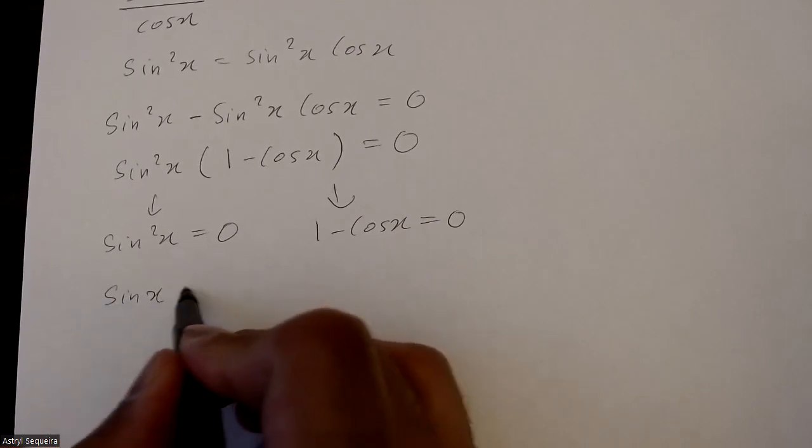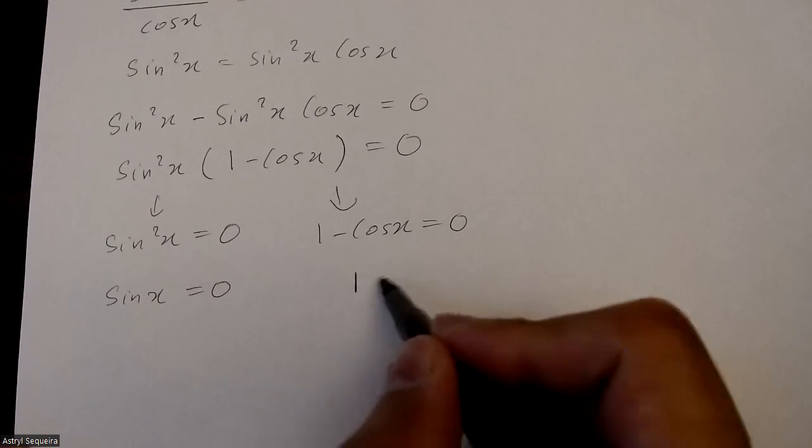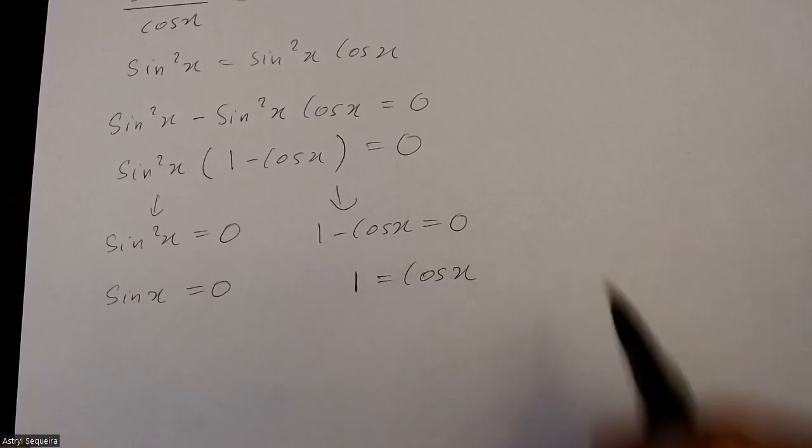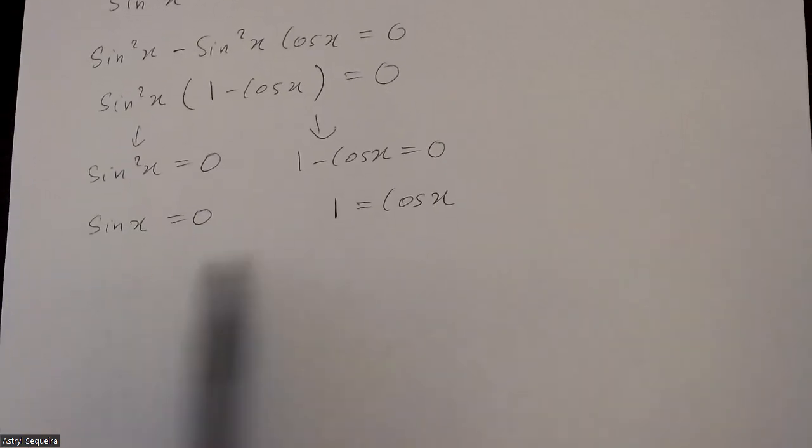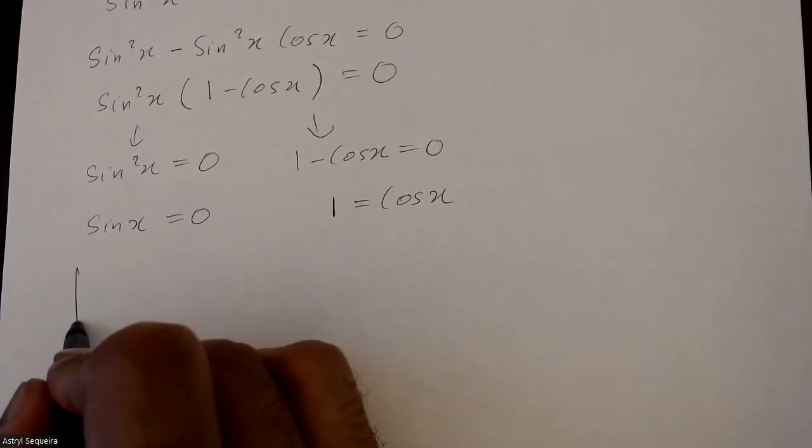So here sine x is just going to equal 0 and over here cos x is just going to equal 1. I can't use cast rule to solve these because the values are 0 and 1, I just have to use my sine and cosine graphs.